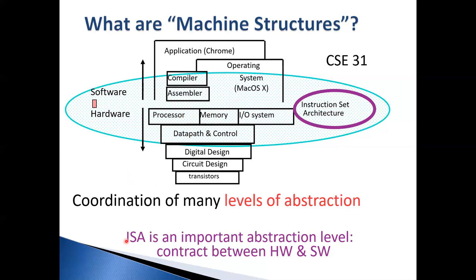We need what we call Instruction Set Architecture, or ISA. Architecture means how the hardware is constructed so that it understands your program. Basically it is an abstraction — it governs how the zeros and ones are interpreted. It's a mapping of zeros and ones to actions, or you can say a contract between hardware and software. Different types of CPUs have different architectures, which means different sets of instructions. For example, MIPS has a different structure compared to Intel.